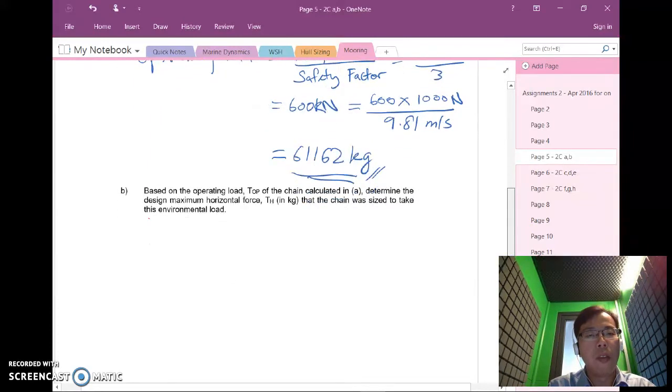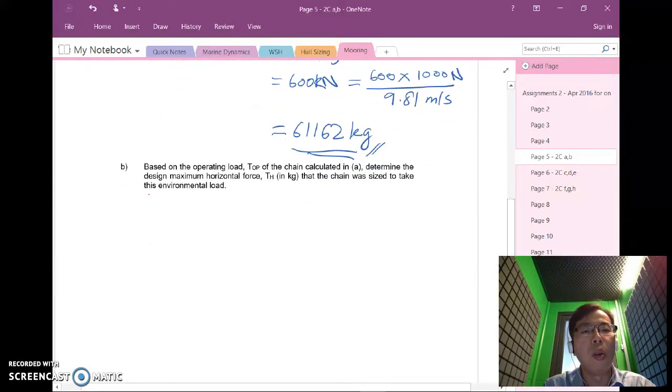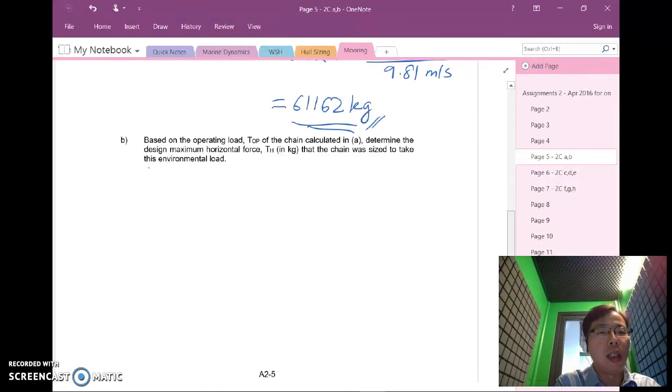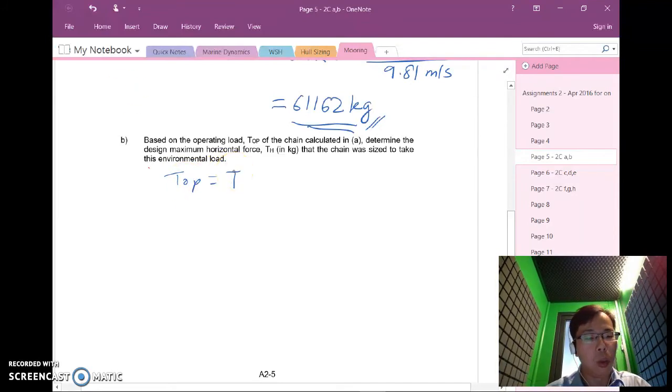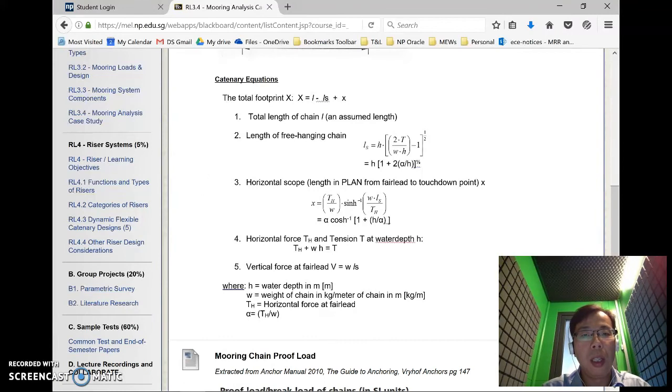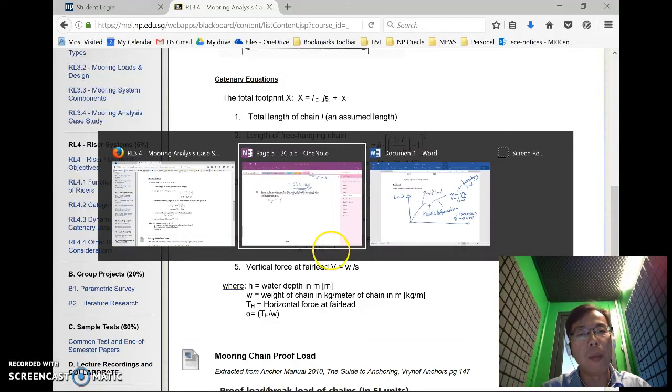For part b, based on this operating load of the chain, determine the design maximum horizontal force Th. So essentially this Top is equal to my T in the set of equations here. If you look at the set of equations, my Top equals the tension T in equation number 4 and I'm supposed to find Th.